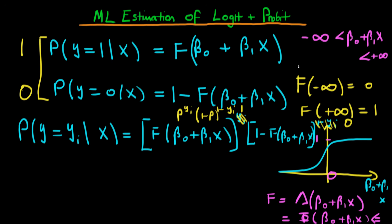When y_i equals 0, the first term is raised to the power 0, making it equal to 1, and the second term becomes 1 minus f — which is exactly the probability that y_i equals 0 given x. So our likelihood function is behaving exactly as we would like it to.